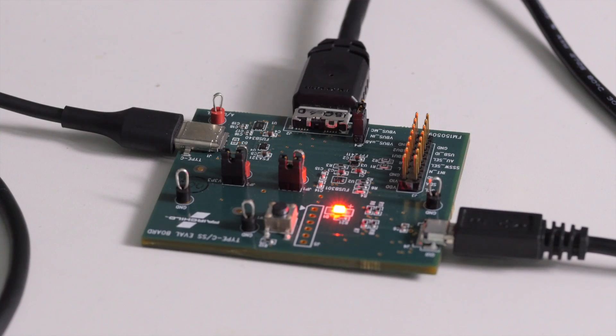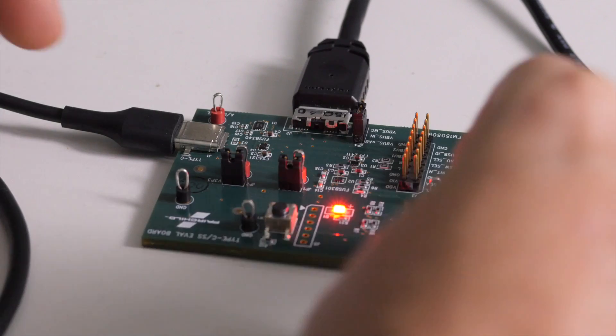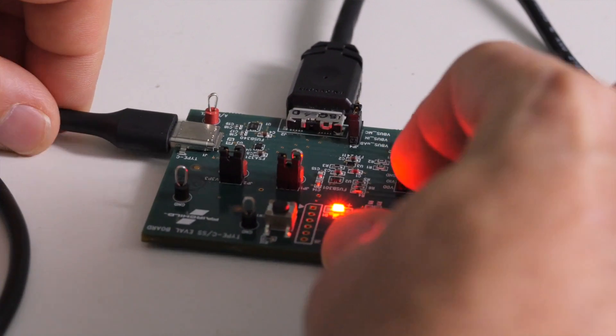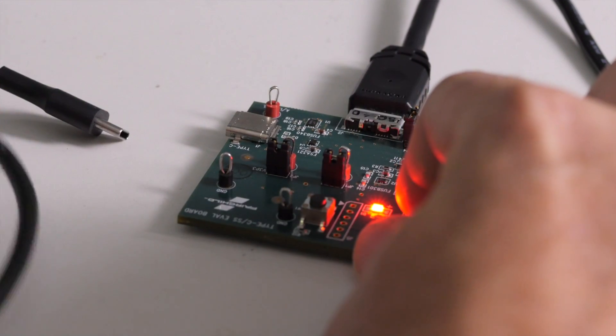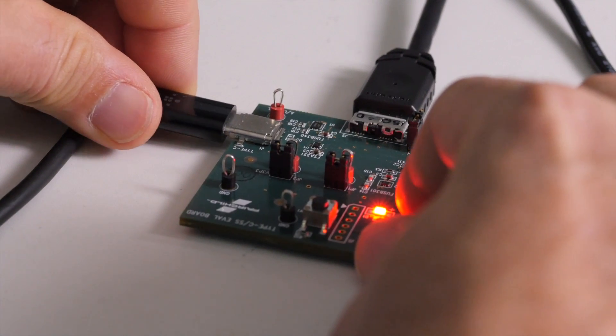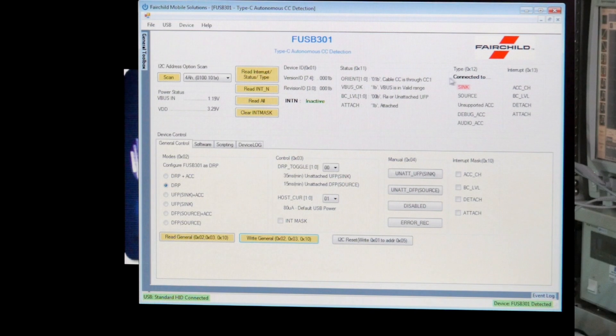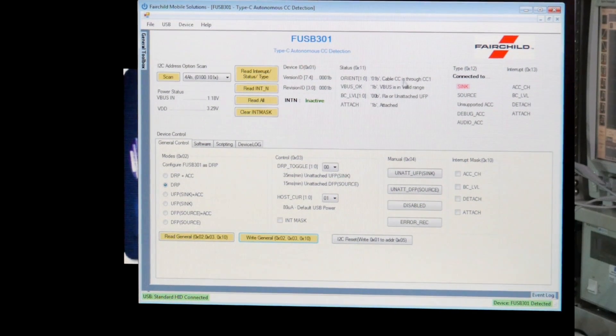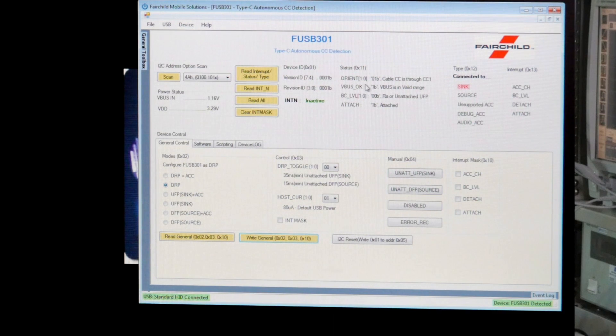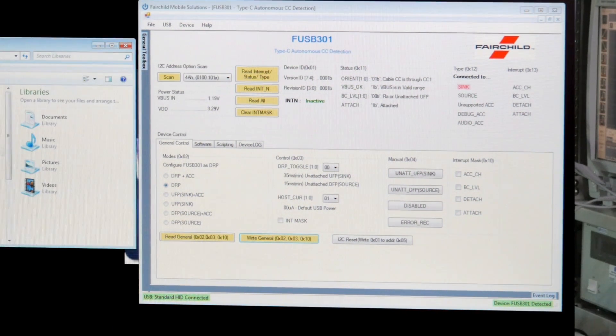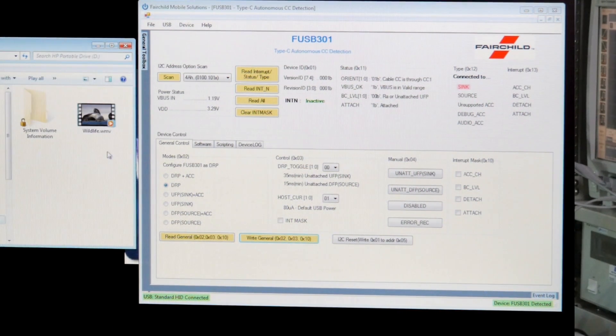Without changing any of the configurations on the FUSB301, I will now attach the Type-C hard drive. As you can see here, we are connected to a sink now instead, and the connection is through the CC1 channel. You will also see that the hard drive is now visible in my PC.